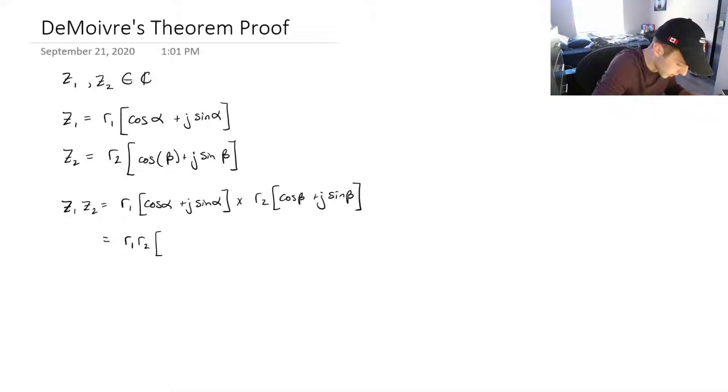So, we're going to get cos of alpha times cos of beta. And then we're going to get plus j times cos of alpha sin of beta plus j. And then we got sin of alpha cos of beta.